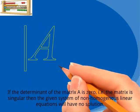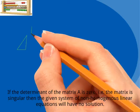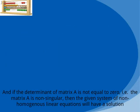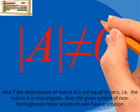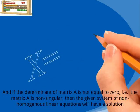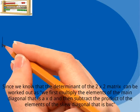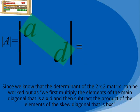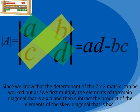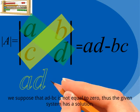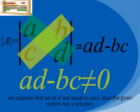If the determinant of matrix A is zero, that is the matrix is singular, then the given system of non-homogeneous linear equations will have no solution. And if the determinant of matrix A is not equal to zero, that is the matrix A is non-singular, then the system will have a solution. The determinant of a 2×2 matrix is found by multiplying the elements of the main diagonal — A times D — and subtracting the product of the elements of the skewed diagonal — B times C. We suppose that AD minus BC is not equal to zero, thus the given system has a solution.